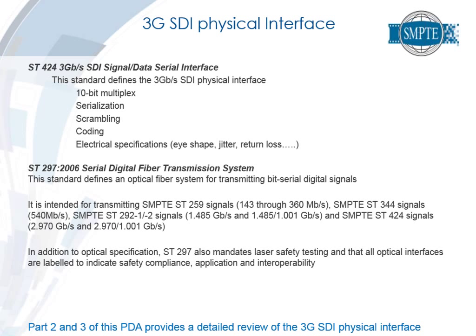The physical interface standard, SMPTE 424, is the 3G equivalent of SMPTE 292, the 1.5G SDI standard. It includes all electrical signal requirements, parameters, multiplexing, scrambling, and coding — this is where the rubber hits the road for the coaxial cable interface. SMPTE 297, the optical fiber interface, was also updated to include support for 3G, now covering all SDI data rates from 143 megabits per second through to 3 gigabits per second, including laser safety testing and optical interface labeling for compliance.